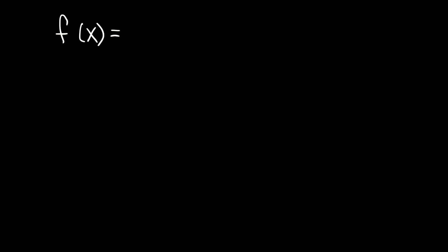In this video, we're going to talk about how to find the inverse of a function. Consider the function f of x is equal to 2x minus 7. The first thing that you should do is replace f of x with y. y and f of x are basically the same thing.